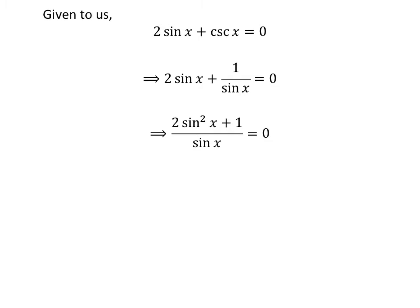Adding the fractions gives us 2 sin² x plus 1 over sin x equals 0.